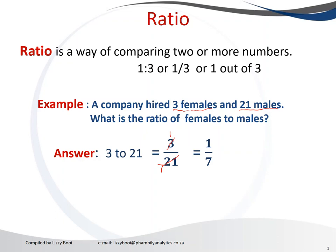Therefore it means if we have to interpret it, we can say there are one female to seven males. For every female they hire, they also hire seven more males.